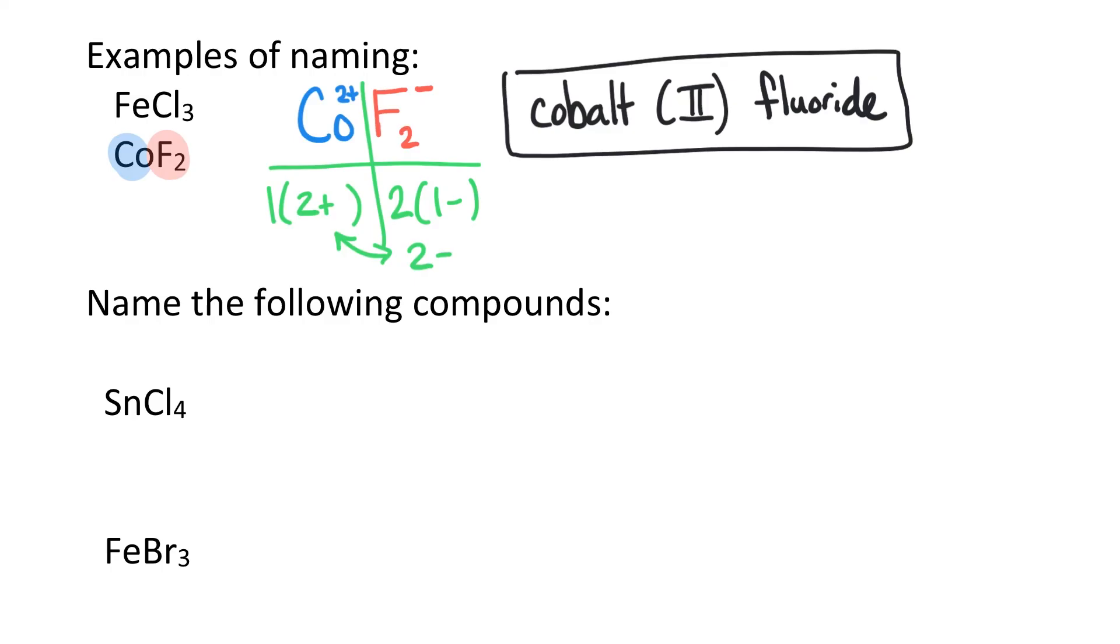So, now we're going to look at the answers here. You should be able to see that SnCl4 is going to be tin (IV) chloride. And FeBr3 is going to be iron (III) bromide.